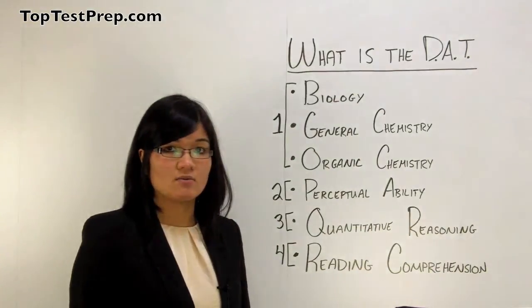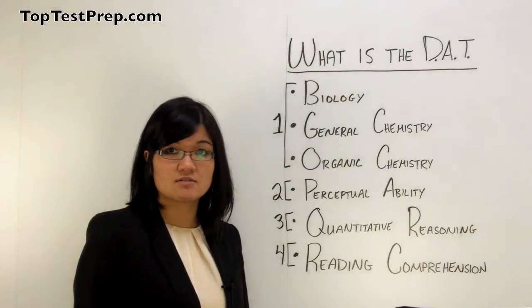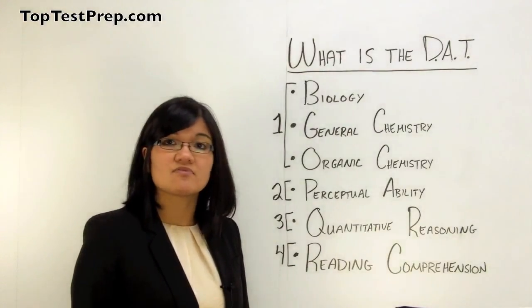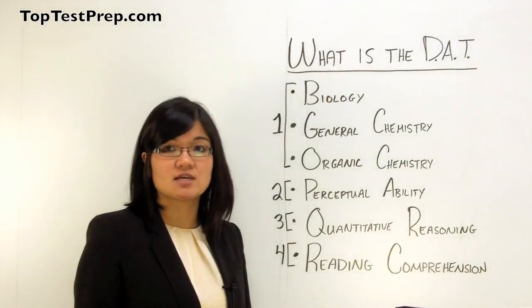A quantitative reasoning, basic math and arithmetic, and finally a reading comprehension test. The DAT is five hours long from start to finish and can be taken at any Prometric Center throughout the United States.